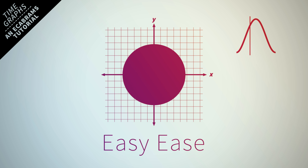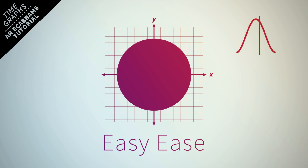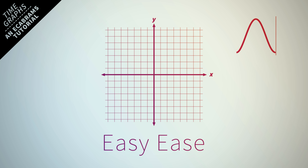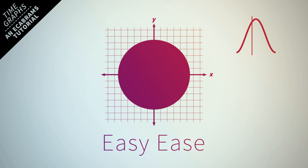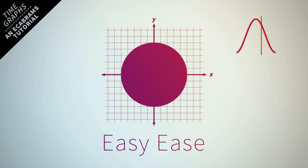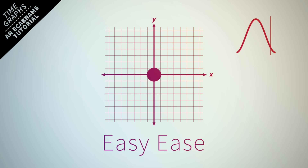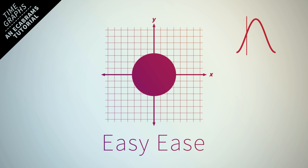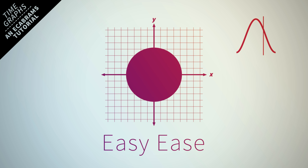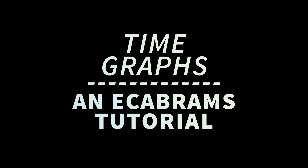Another form is called the easy ease and you can see how this is kind of just like an easy, lazy curve. Basically it means you're easing out of a keyframe or easing into a keyframe, so the value is kind of slowing as it gets there.